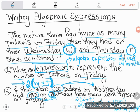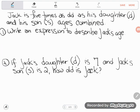Let's look at one more example. Jack is five times as old as his daughter and his son's ages combined. First it says write an expression to describe Jack's age. Jack is five times as old, but it's five times as old as what?